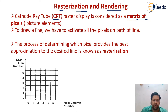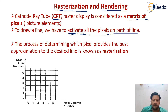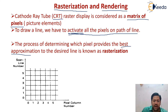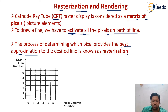Suppose we have to draw a line. What we have to do is activate all the pixels on the path of the line — activation of the pixel with a given color is important. Rasterization is the process of determining which pixel provides the best approximation, meaning finding out which is the best pixel to activate on the desired line. This process is known as rasterization.